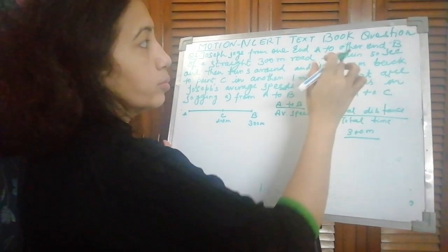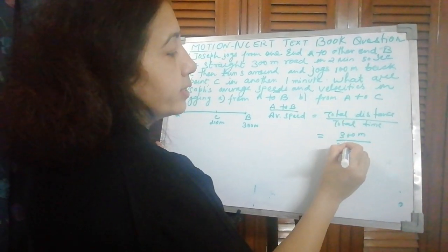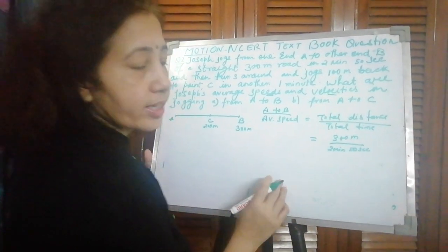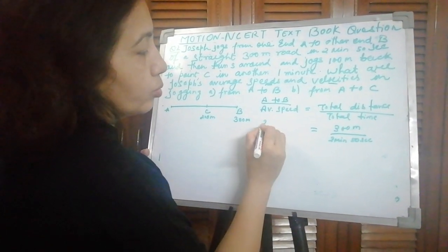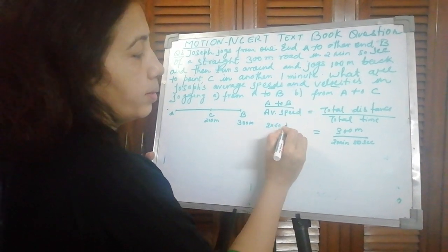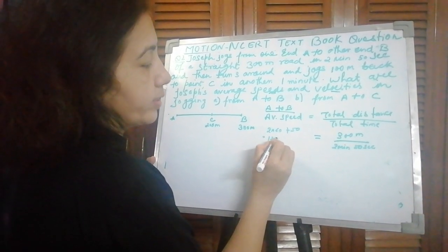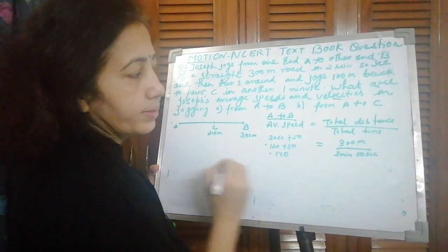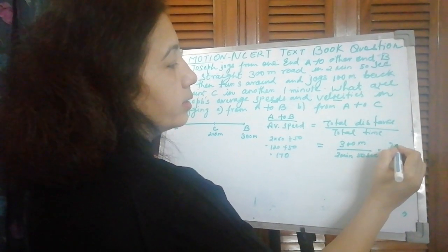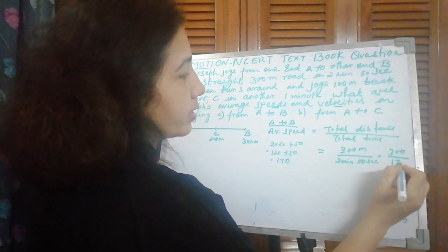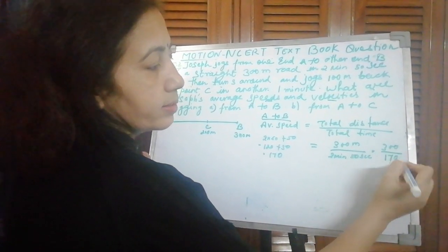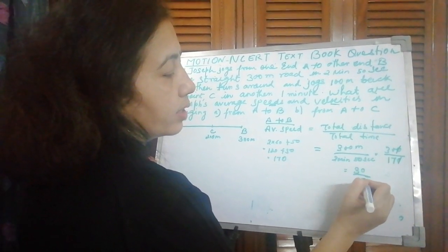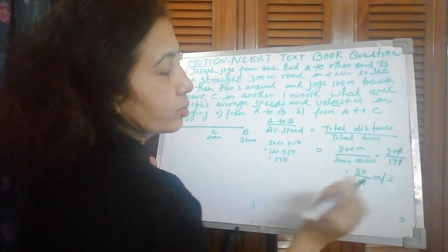And total time taken was 2 minutes 50 seconds. Convert this whole thing to seconds: 2 minutes means 2 into 60 plus 50, that is 120 plus 50, that is 170 seconds. So this becomes 300 meters upon 170 seconds. You can leave it as it is or convert to decimal.